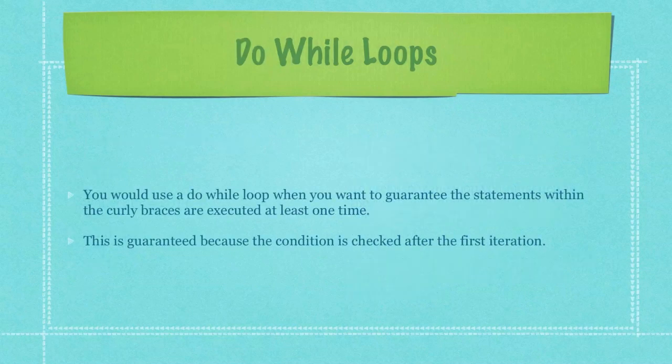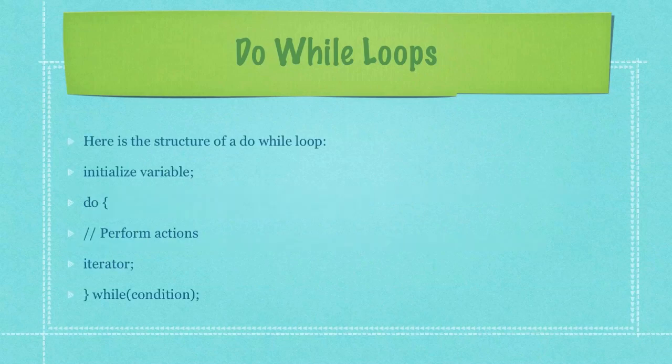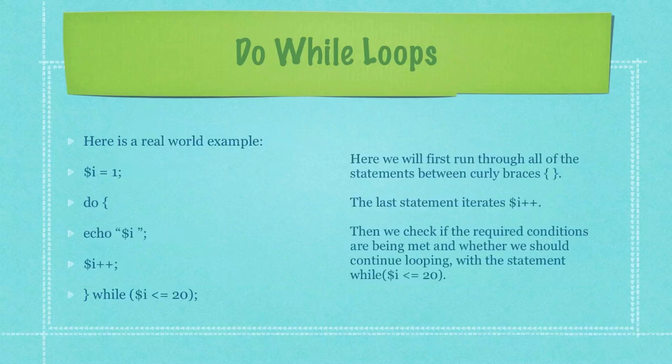You would use a do while loop when you want to guarantee the statements within the curly braces are executed at least one time. This is guaranteed because the condition is checked after the first iteration. Here is the structure of a do while loop. We will first run through all the statements between the curly braces.